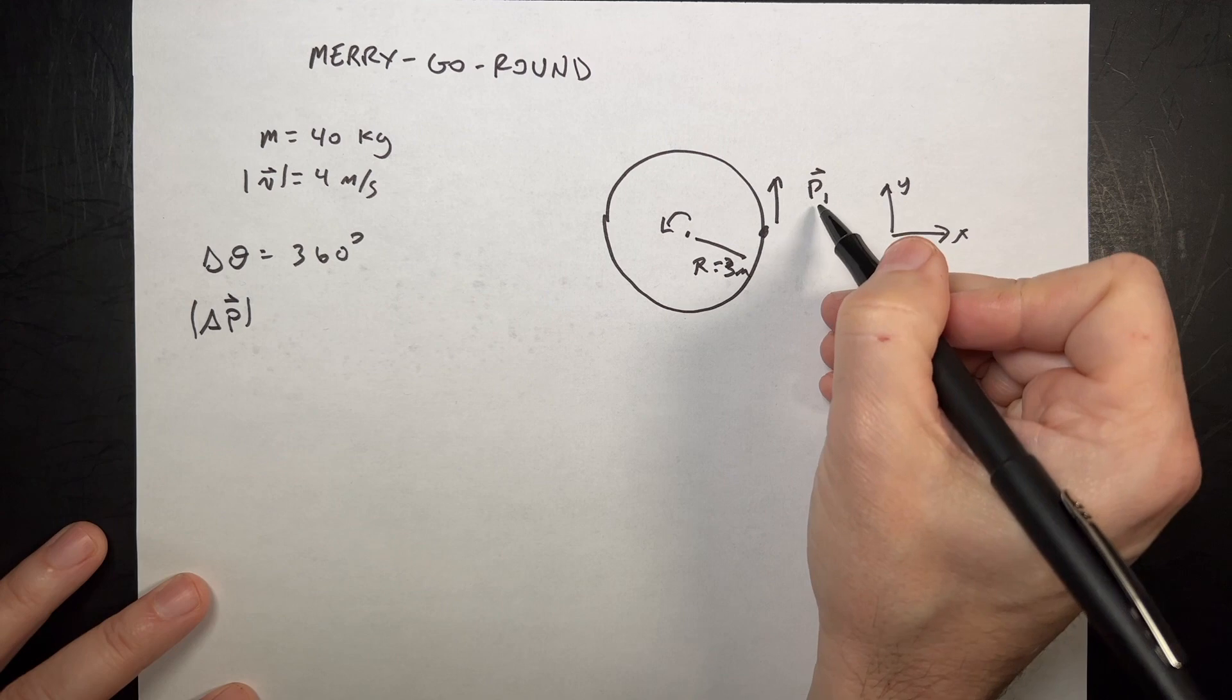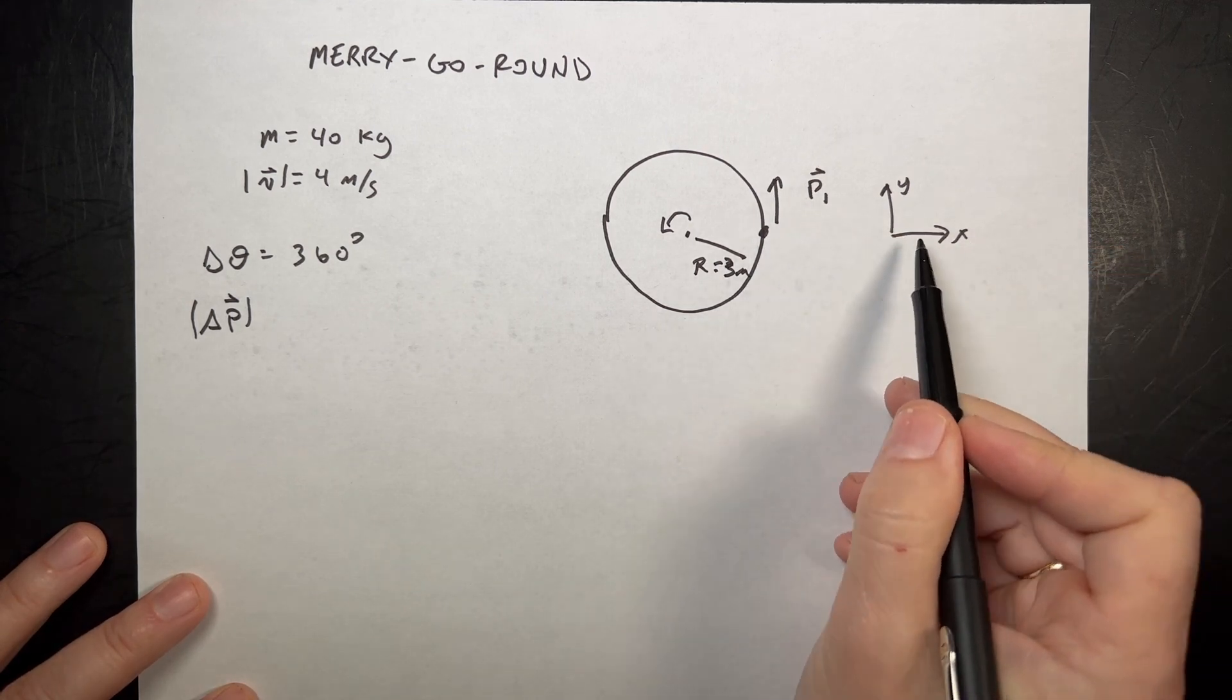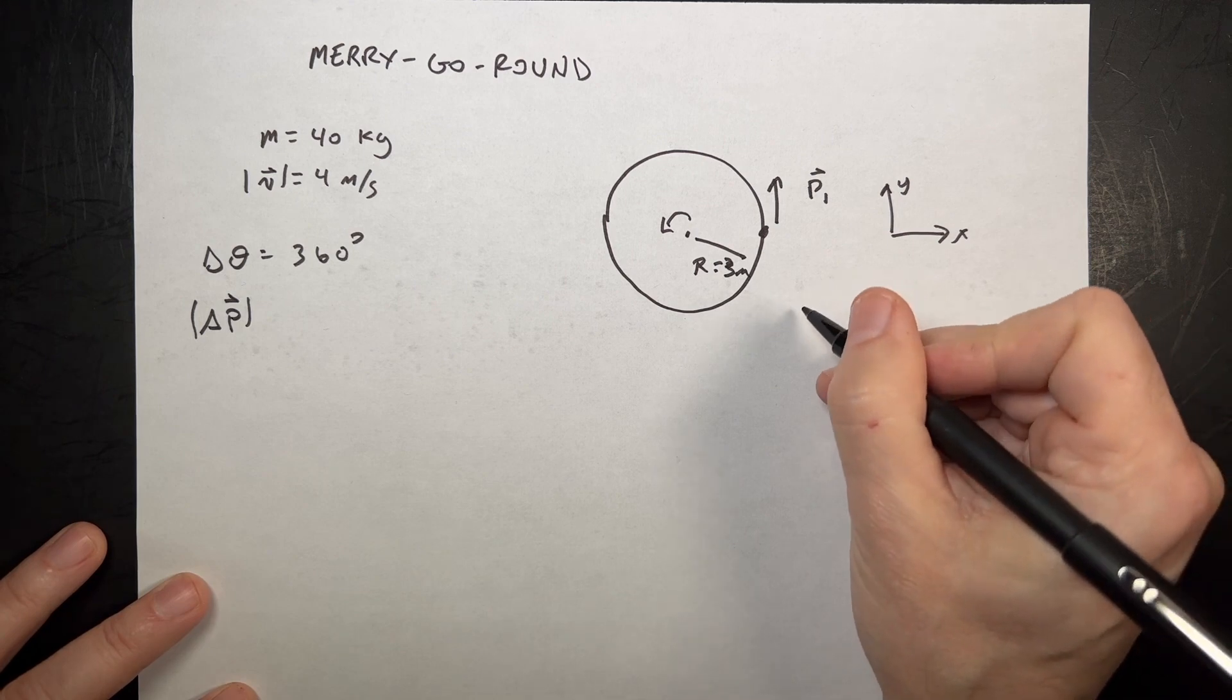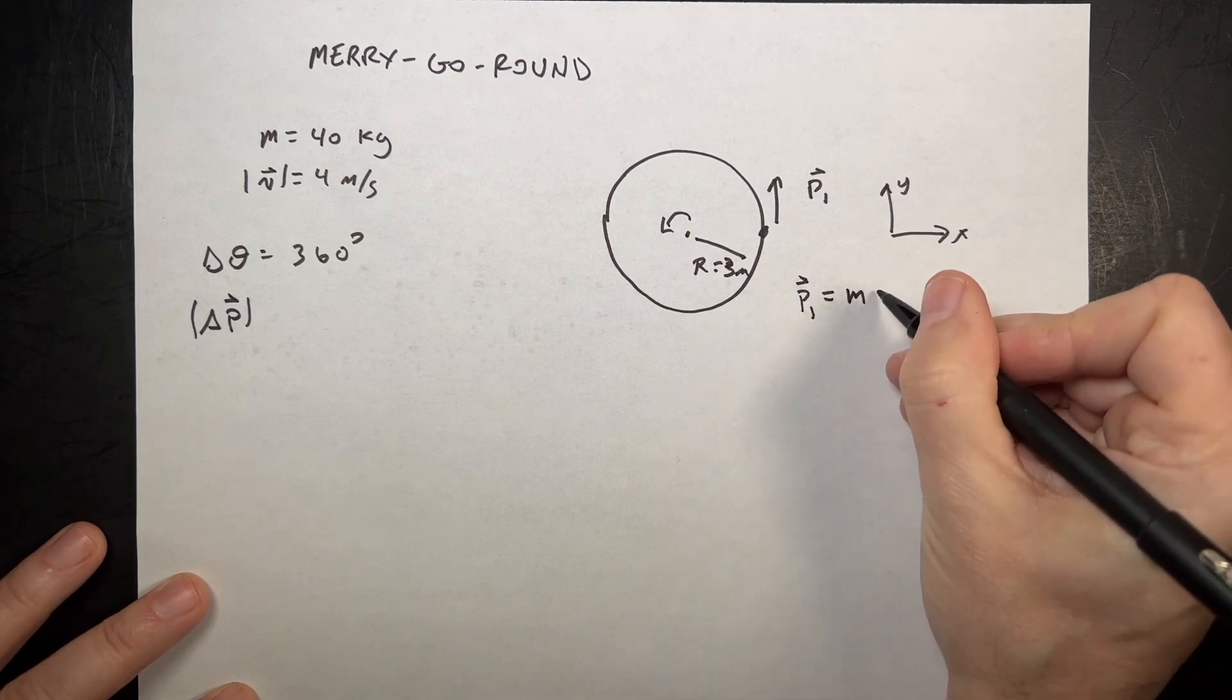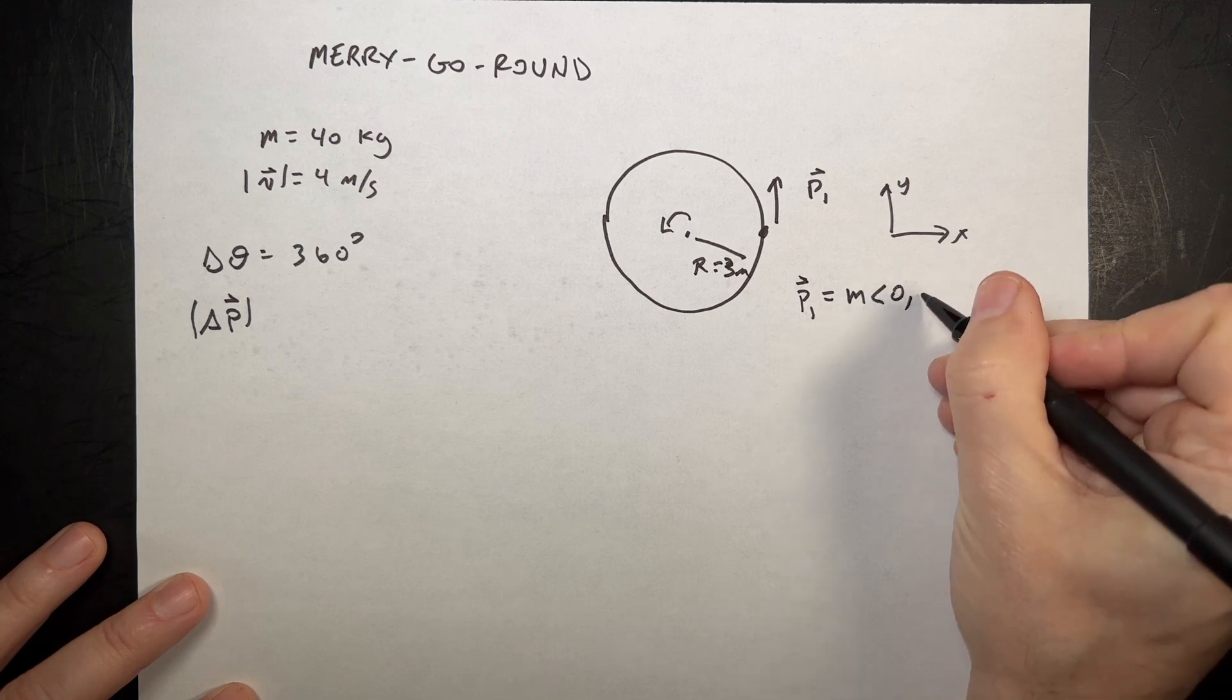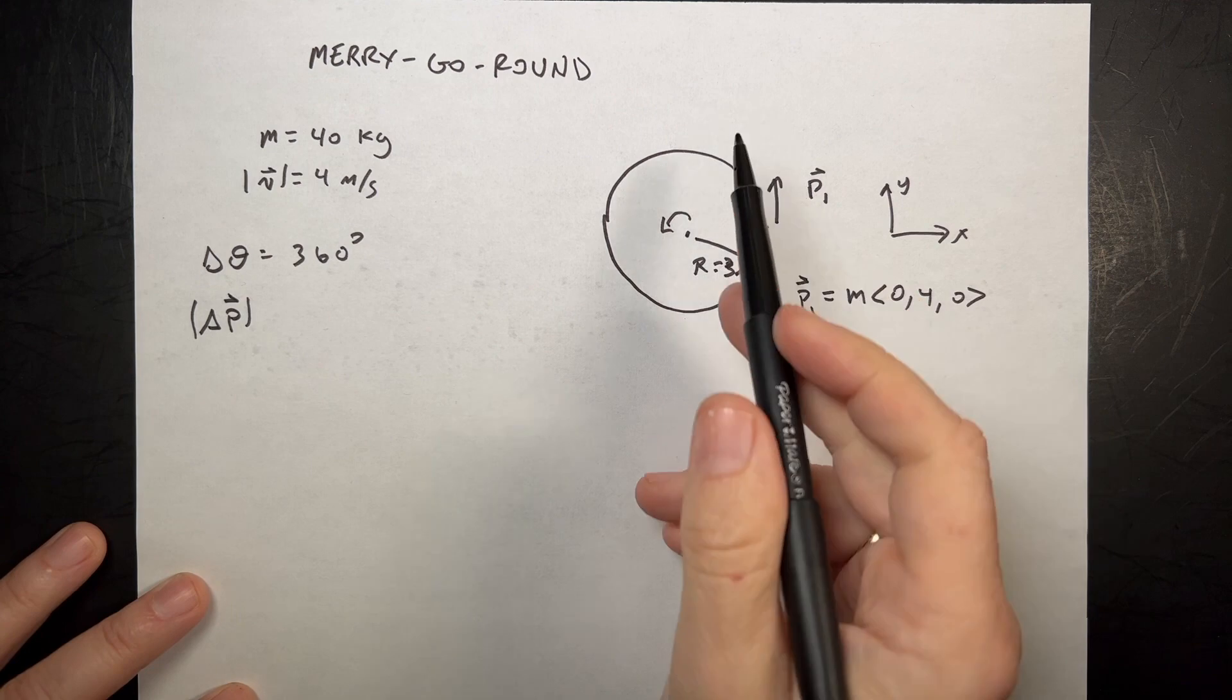Here's P1. I'm going to write this as a vector. So this is the x direction, that's the y direction. Then I'm going to say P1 is going to be equal to the mass times 0, 4, 0. Right? 4 meters per second in the y direction.